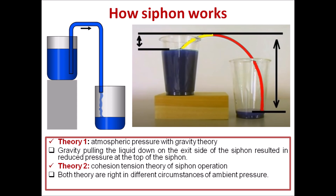There are two theories in this case. The cohesive tension theory can fail if there is a bubble in the tube — if a bubble is present, the cohesion theory fails. If instead a vacuum is created, the vacuum force combined with gravity drives the flow. Thus, the two theories together explain the siphon mechanism.